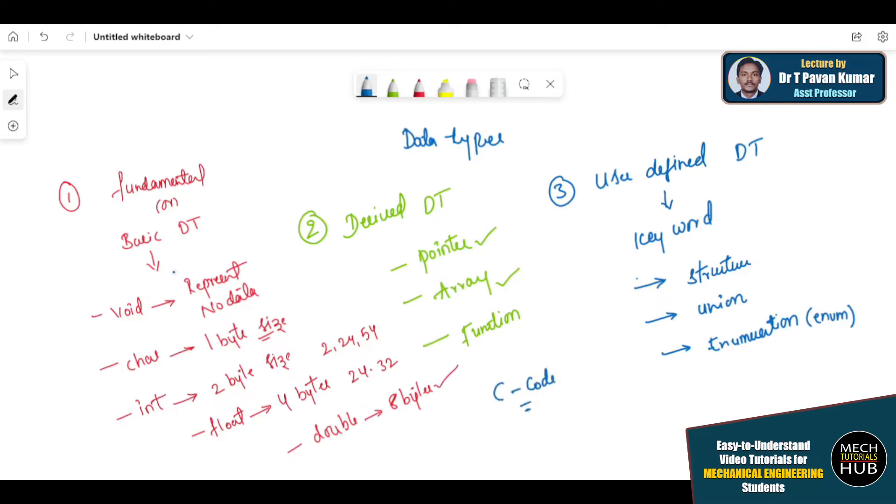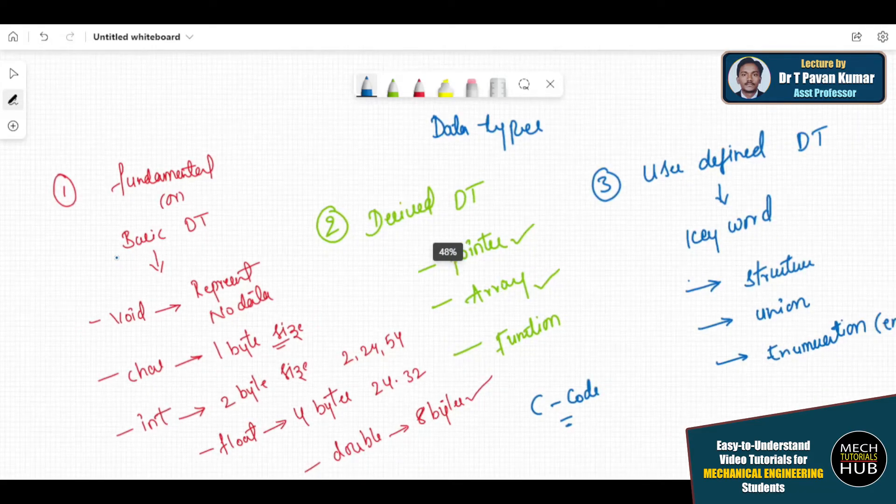These are the things that one should remember before writing any C code. Then only you can incorporate these data types in your program, whatever the program you write. Let me give some more clarity.